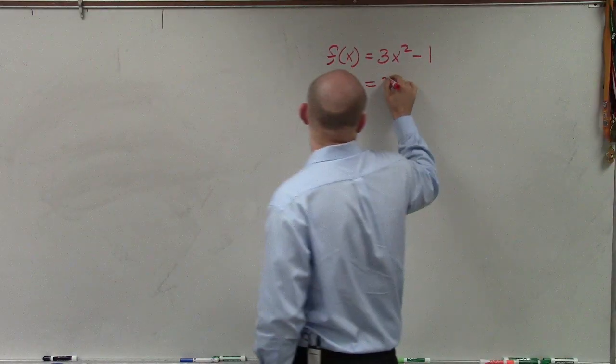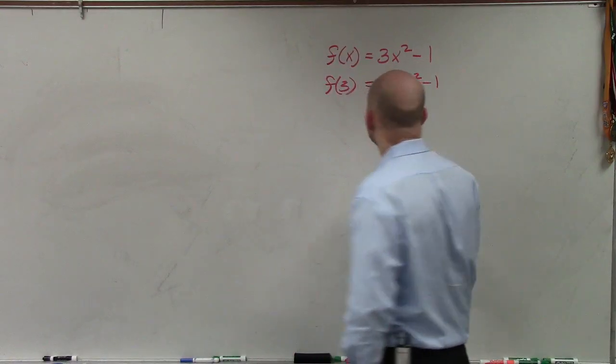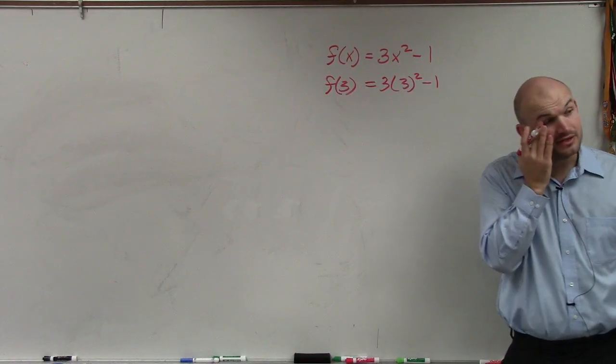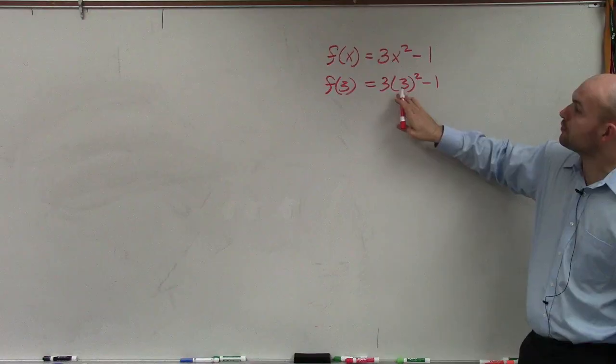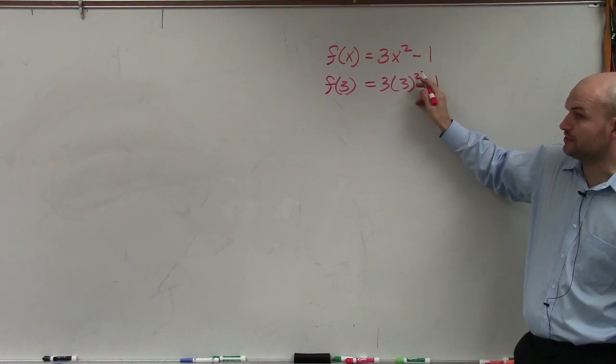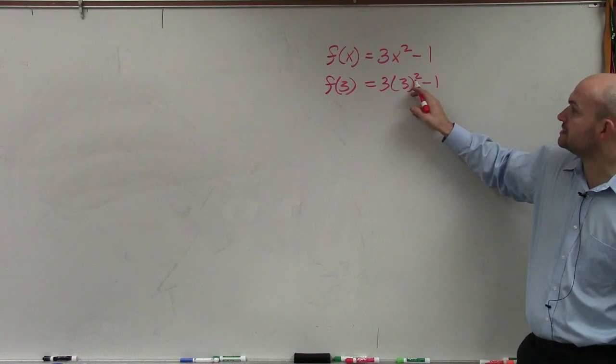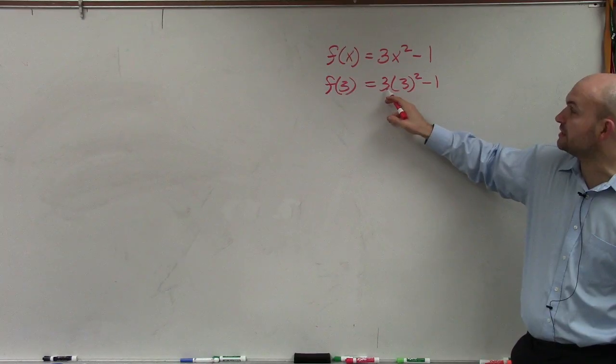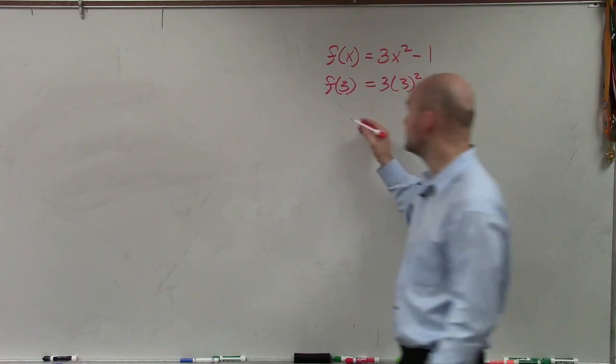So now I can do 3 times 3 squared minus 1. Then to evaluate, I just use my order of operations. So I square the 3 first. 3 squared is going to be 9. 9 times 3 is going to be 27, minus 1 is 26.